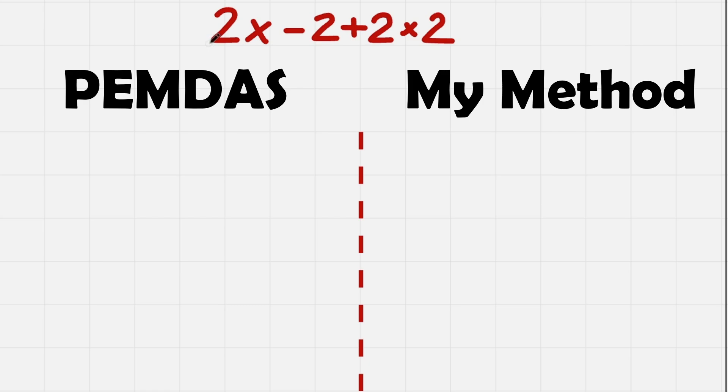So why exactly will PEMDAS fail here? Let's see. We have subtraction, addition, multiplication. So we do multiplication first. We get 2x minus 2, and after multiplication we get plus 4.